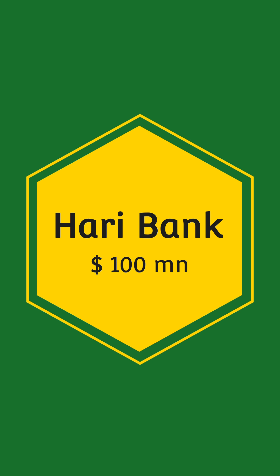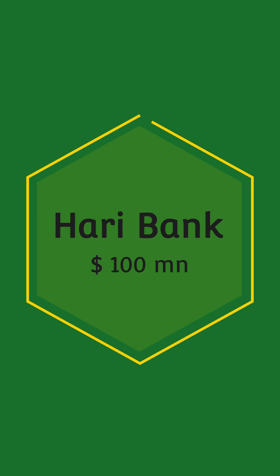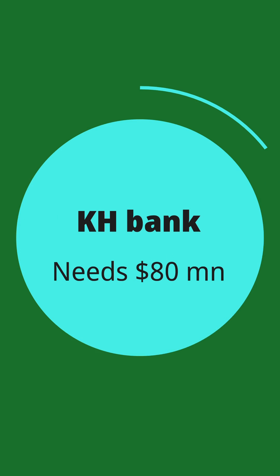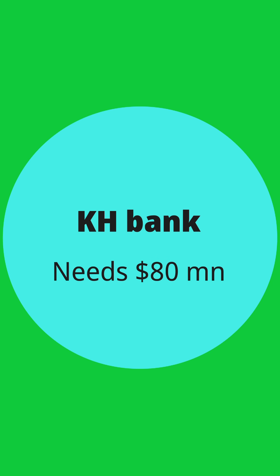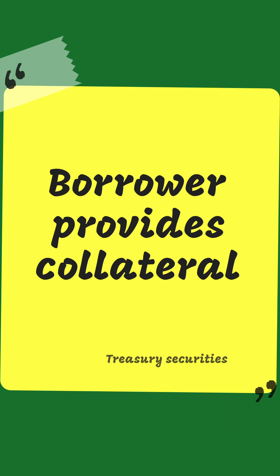Hardy Bank has 100 million dollars to invest — it has excess liquidity and wants to invest this money. On the other hand, KH Bank needs 80 million dollars for financing purposes. In this market, both KH Bank and Hardy Bank have a requirement in the overnight market, so there is a perfect match of maturity.